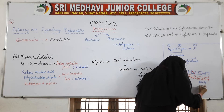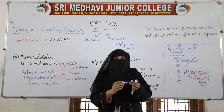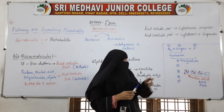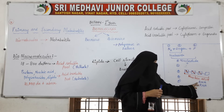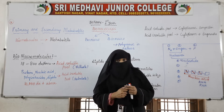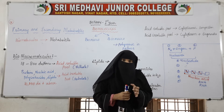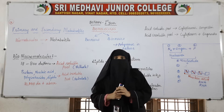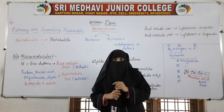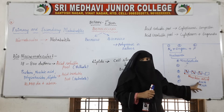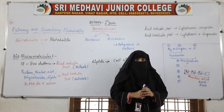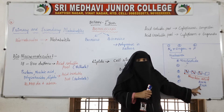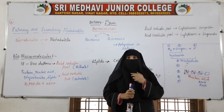We have two types of nucleic acids: DNA and RNA. Both are found in the bodies of living organisms, but only one acts as the genetic material. In our body, DNA is the genetic material, while RNA helps in the synthesis of proteins.